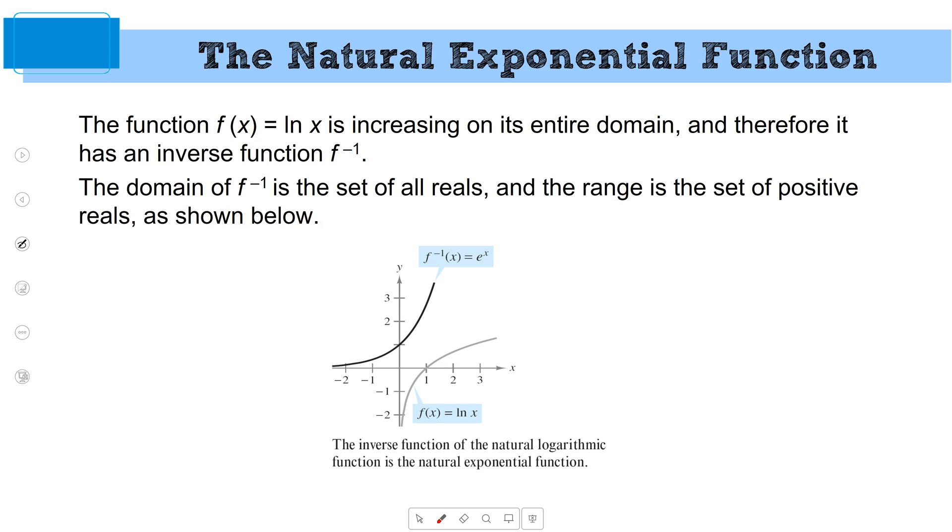We've got the natural log function over here going through the point 1, 0. We've got the natural exponential function going through the point 0, 1. Domain and ranges. So notice that the natural log function, you cannot take the natural log of a negative number. You cannot get a value for e to the x negative. The domain of the natural log of x is the same as the range of e to the x. The range of natural log of x is the same as the domain of e to the x.